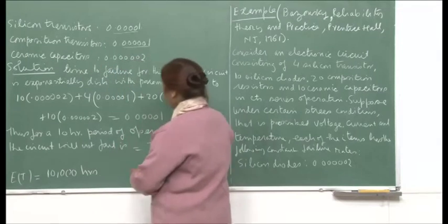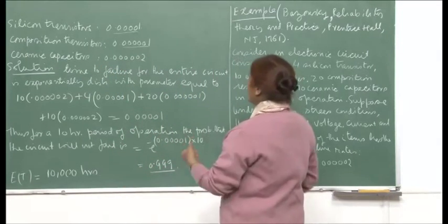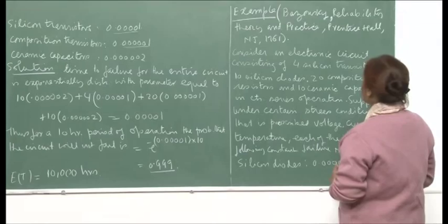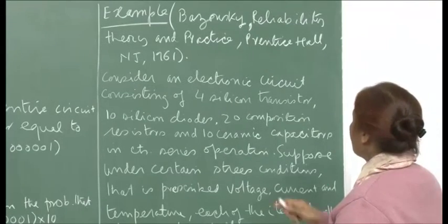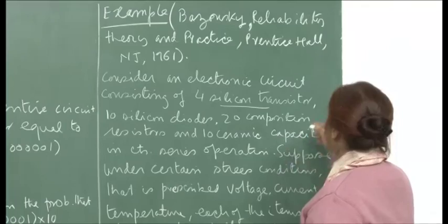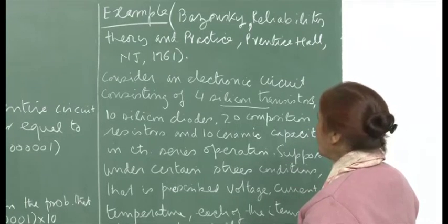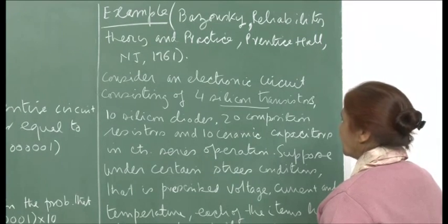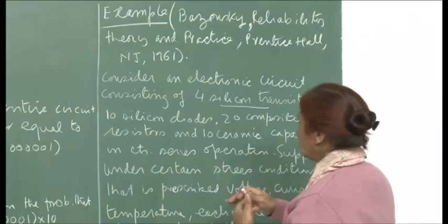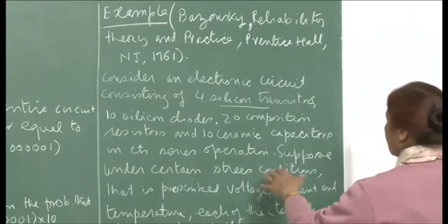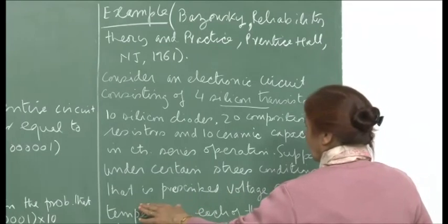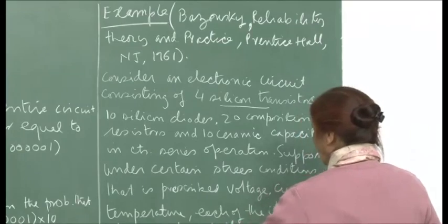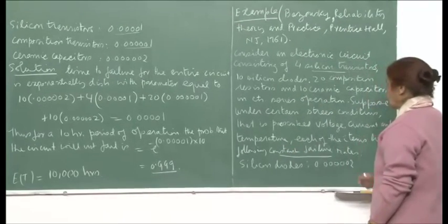Consider an electronic circuit consisting of 4 silicon transistors, 10 silicon diodes, 20 composition resistors, and 10 ceramic capacitors in continuous series operation. Under certain stress conditions — prescribed voltage, current, and temperature — each item has a constant failure rate. That means the failure law is exponential.